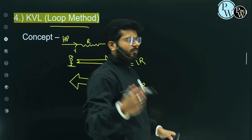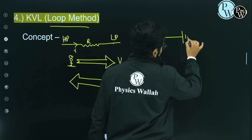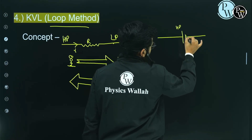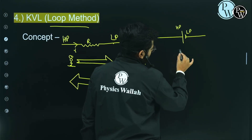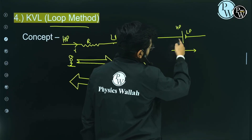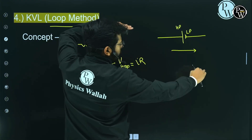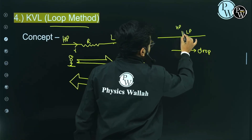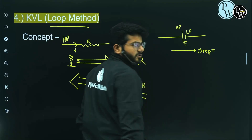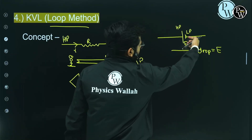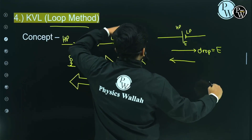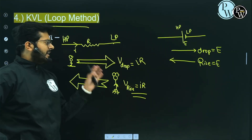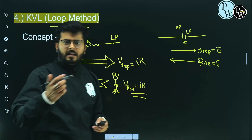Now let's talk about the EMF of a battery. The longer line is higher potential and the shorter line is lower potential. If you observe the battery from higher to lower potential, you observe a potential drop of E volts. If you observe from lower to higher potential, you observe a potential rise of EMF E. This is the idea we must apply while using KVL concepts.